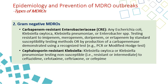For gram-negatives, we have several types. The first is CRE, or carbapenem-resistant Enterobacteriaceae — E. coli, Klebsiella, Escherichia, Klebsiella pneumoniae, or Enterobacter species testing resistant to one of the carbapenems, including imipenem, meropenem, doripenem, or ertapenem by standard susceptibility methods, or finding carbapenemase-producing organisms using special testing like PCR or modified Hodge test.